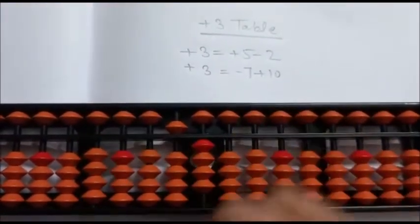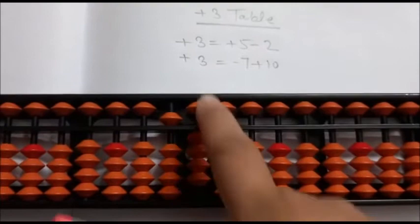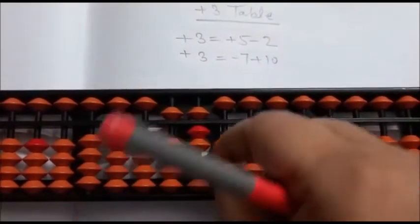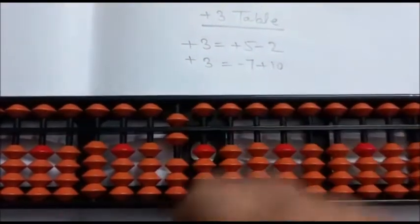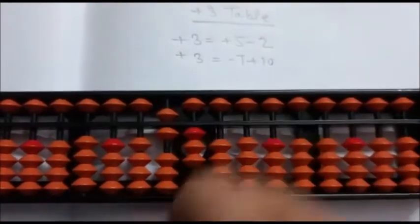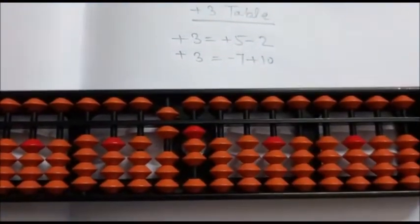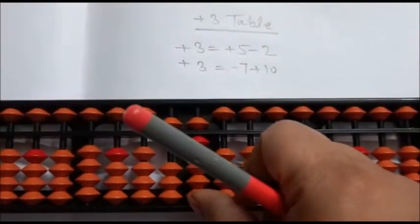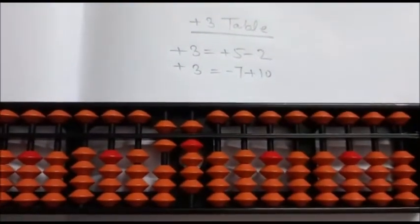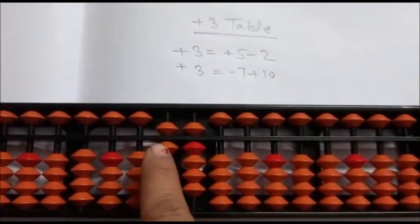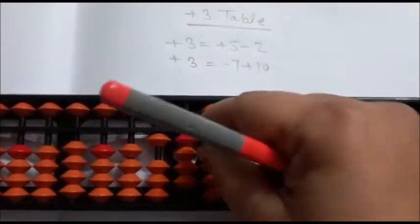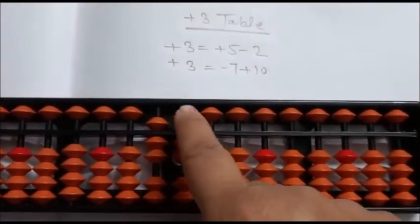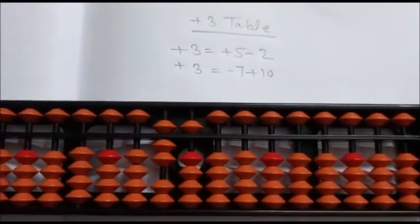Again, plus 3 is direct. Again, plus 3: plus 5 minus 2. Again, plus 3: minus 7 plus 10. Again, plus 3 is direct. Again, plus 3: plus 5 minus 2. Again, plus 3 is direct. Answer is 69.